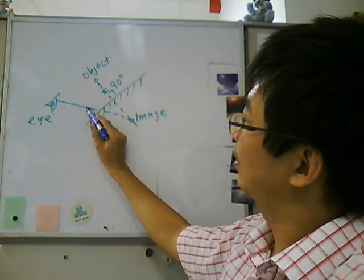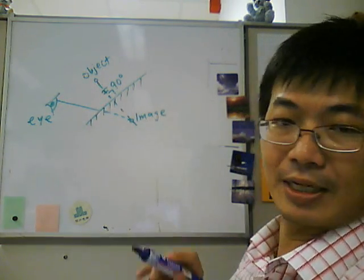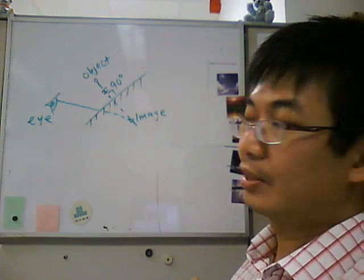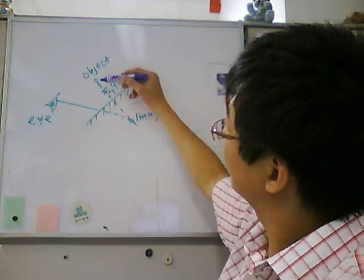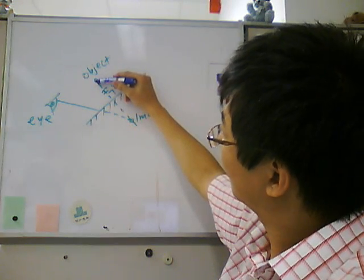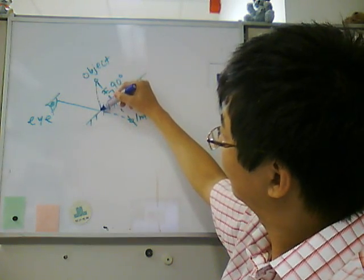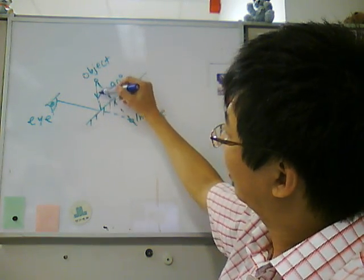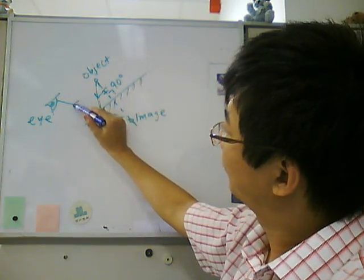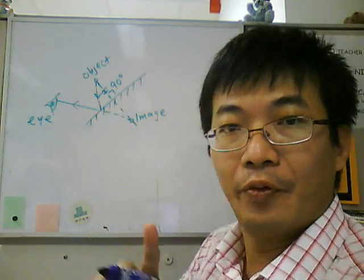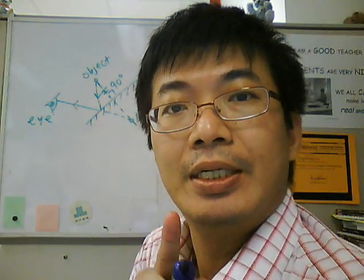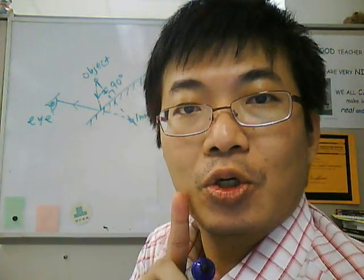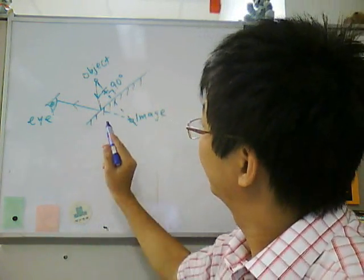This must be a straight line. Next, you draw from the object and add in the arrow. Remember, the light must go into the eye.